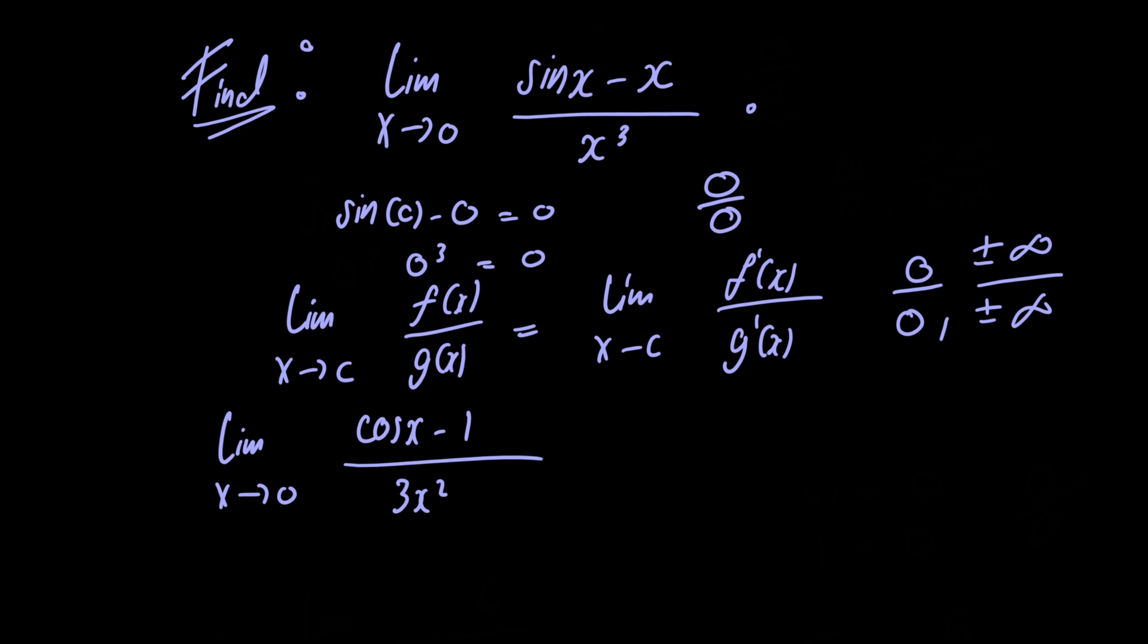If we were to let x equal 0, we would have cosine of 0 minus 1, and this is equal to 1 minus 1, which is 0. And in the denominator, we would have 3 multiplied by 0 squared, which is also equal to 0.